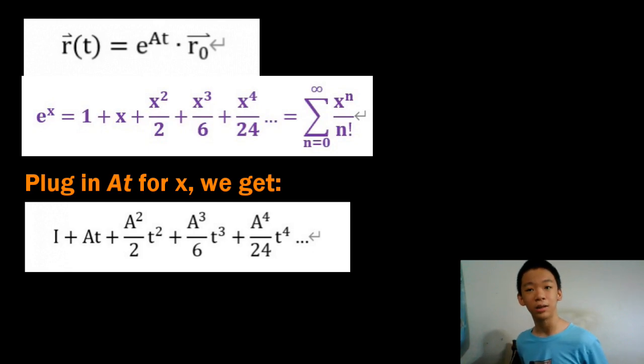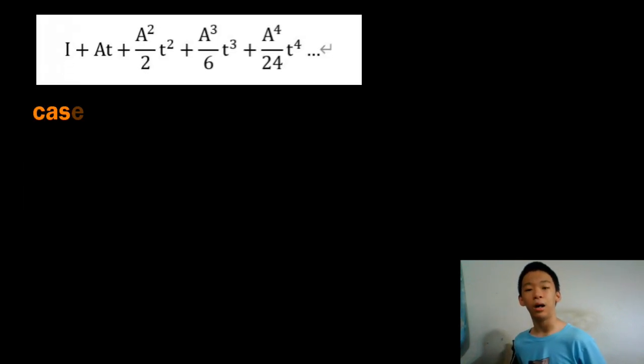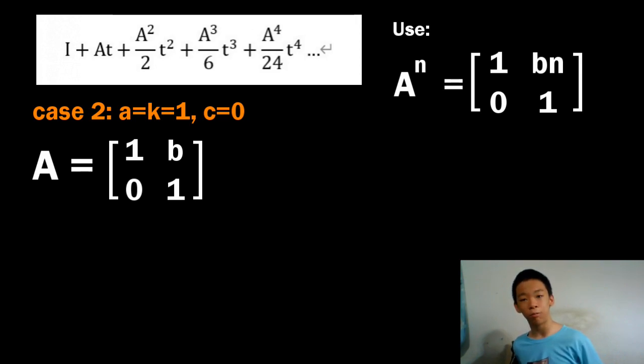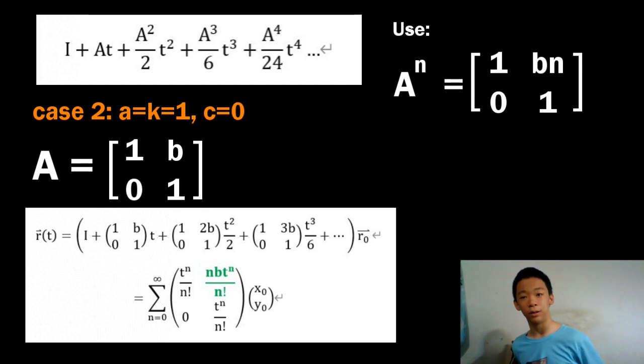Here, I'm going to show you guys another case where a and k are both equal to 1 and c is equal to 0. Therefore, a is going to be the matrix 1b01, also known as a shear matrix. Using the property that this matrix to the nth power equals 1nb01, we get that r of t can expand like the following.